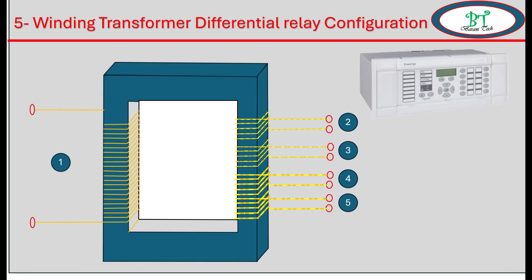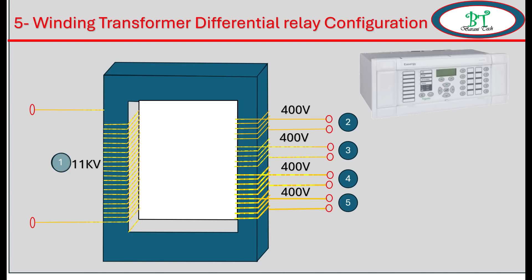The transformer has one HV side and four LV sides. For example, the HV side operates at a certain KV level and the LV side is 400 volts. If winding 2 is connected at 400 volts, the HV side will see the same KV level. Similarly, connecting any other winding at 400 volts gives the same HV voltage. Even if all four windings are connected at 400 volts, the HV side still sees only the same KV level — the voltage is constant.